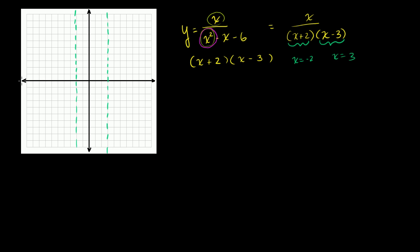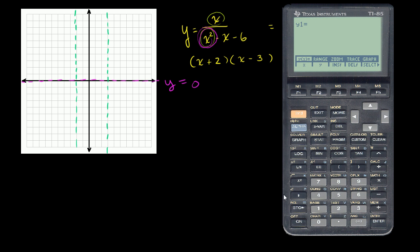I'll draw the horizontal asymptote as a dotted line over our x-axis — that's the line y equals 0. The denominator has a higher degree term, so it's going to grow faster than the numerator. That's true whether you go in the super negative direction or the super positive direction. The denominator grows faster than the numerator, so you're going to approach 0, getting smaller and smaller fractions. Let me show you on my calculator: if x is equal to 10, we have 10 divided by 10 squared minus 10.